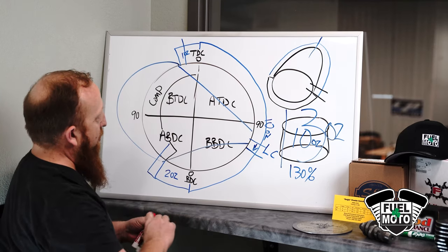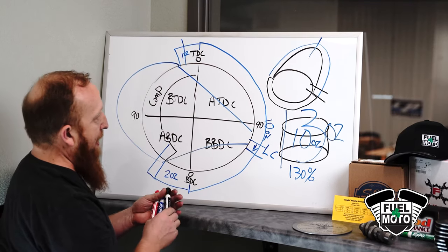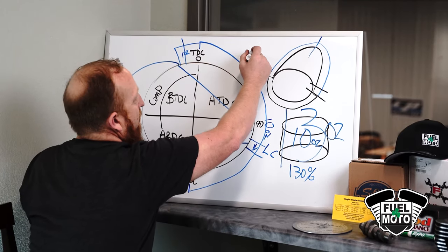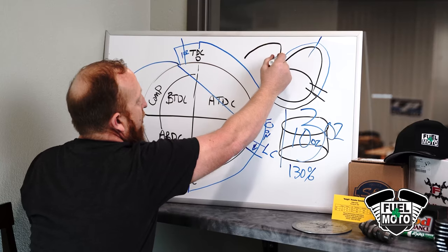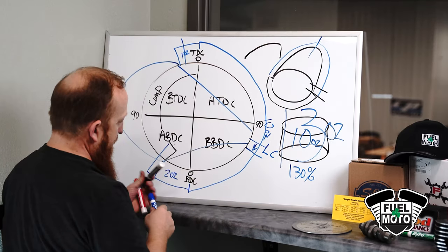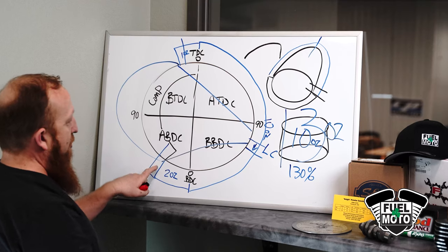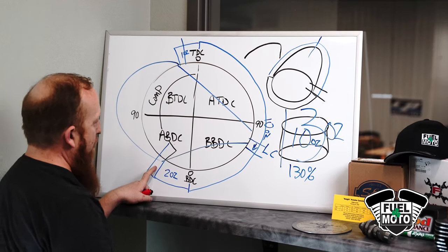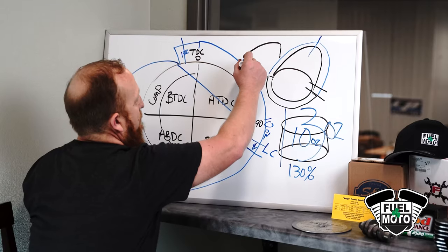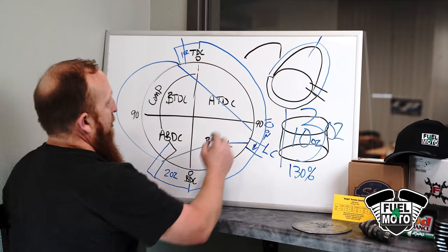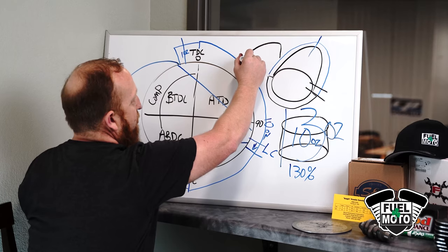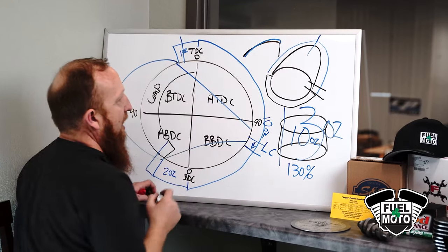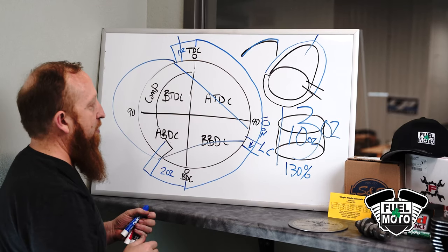So basically what that would do is that would shift the power, your power curve, that your engine makes. Because you're going to rely on the higher RPM airflow, it would shift your power, and you're making less cylinder pressure, you would actually lose low RPM power and gain high RPM power. That's what that shift would do.